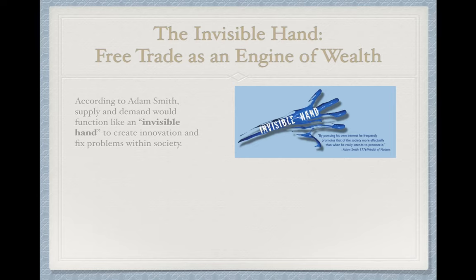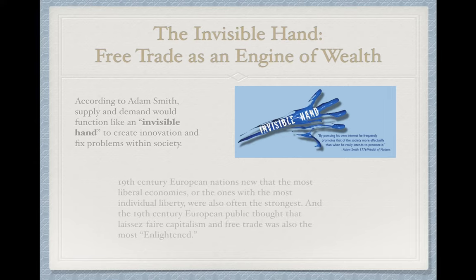Smith thought that supply and demand would function as something like an invisible hand—imagine a hand sweeping through society, creating innovations where they were needed, creating things that people needed, and fixing problems that were hurting society. As he wrote: 'By pursuing his own interest, he frequently promotes that of the society more effectually than when he really intends to promote it.'